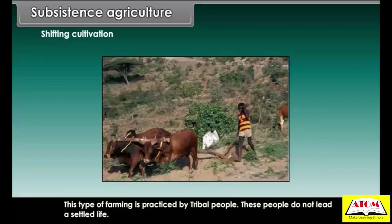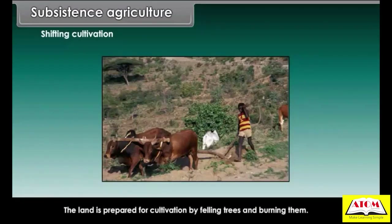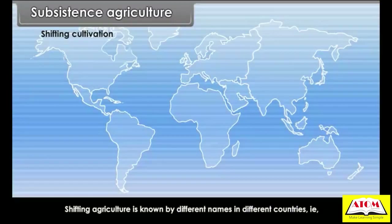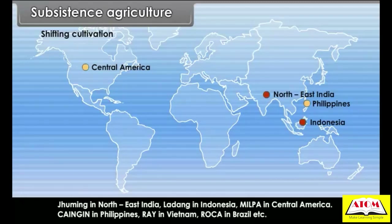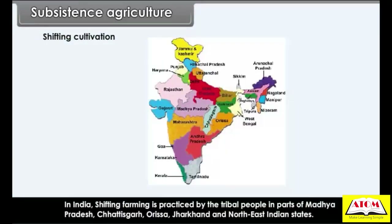Shifting cultivation is practiced by tribal people who do not lead a settled life. The land is prepared for cultivation by felling trees and burning them. Shifting agriculture is known by different names in different countries: Jhumming in northeast India, Ladang in Indonesia, Milpa in Central America, Kengin in Philippines, Rhi in Vietnam, Roka in Brazil, etc. In India, shifting farming is practiced by tribal people in parts of Madhya Pradesh, Chhattisgarh, Orissa, Jharkhand and northeast Indian states.